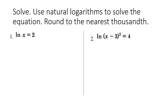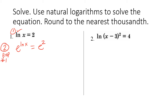Let's apply those steps. Step one is to simplify to one log on both sides — it's already simplified. Step two is to rewrite in exponential form using property number one: we write e to the natural log of x equals e squared. This undoes the natural log, and we're left with x equals e squared.